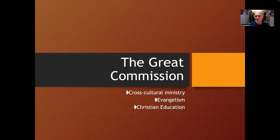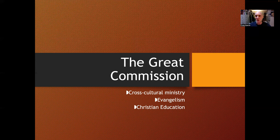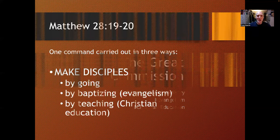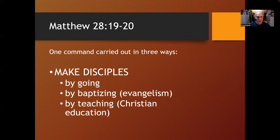Let's look at a major theme that runs through the Gospel of Matthew. Some books have a thesis statement up front, but in the Gospel of Matthew, it's more the conclusion that pulls together the major themes. We look at the Great Commission in Matthew chapter 28, verses 18 through 20, and we learn about cross-cultural ministry, evangelism, and Christian education. There is one imperative surrounded by three subordinate participial clauses — one command carried out in three ways: make disciples of all the nations. You do that by going, by baptizing, and by teaching.